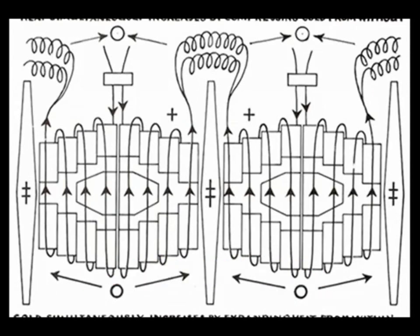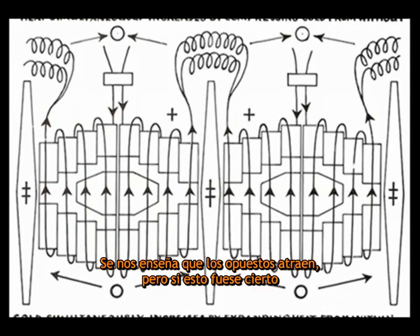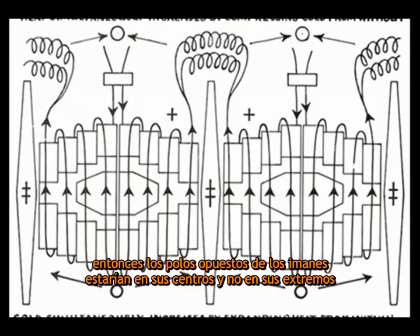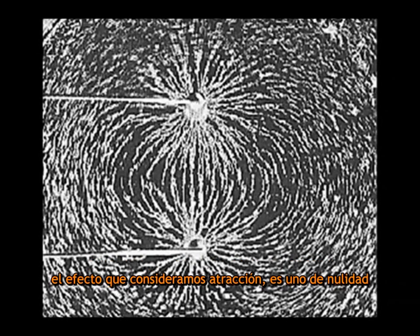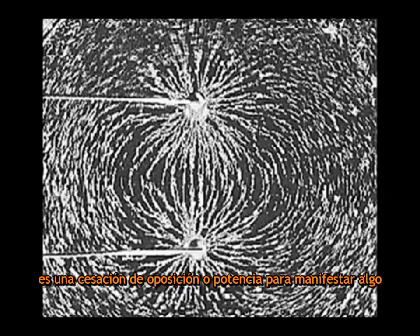We are taught that opposites attract, but if this was so, then opposite poles of magnets would be at their centers, not their ends. When the positive pole of a magnet is brought into contact with the negative pole of another magnet, the effect that we think of as attraction is one of voidance. It is a cessation of opposition or power to manifest anything.